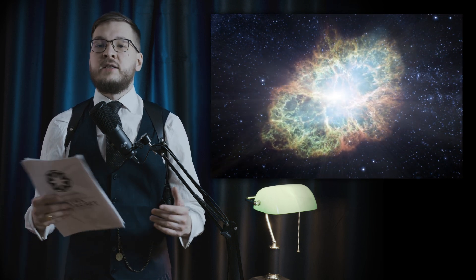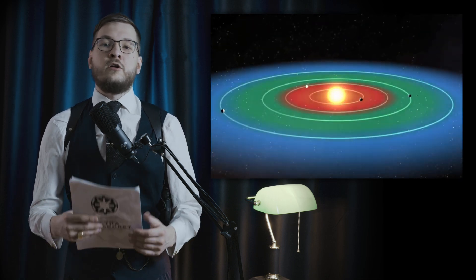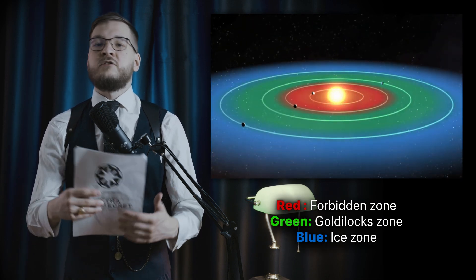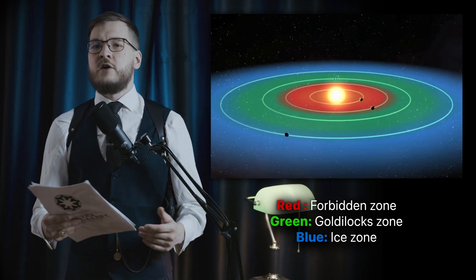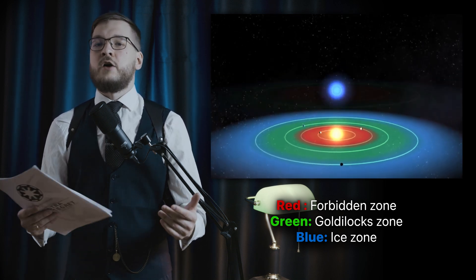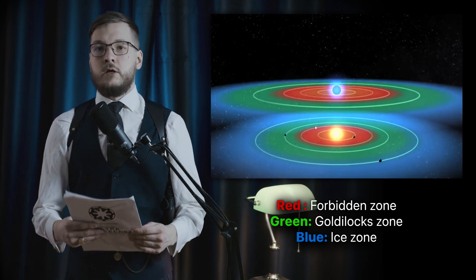So, the Forbidden Zone is the region where planets should not exist, at least according to most classical models of stellar evolution. This area lies extremely close to the white dwarf, within a few million kilometers.